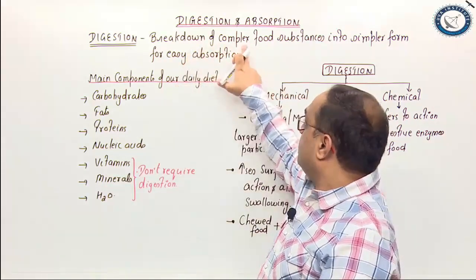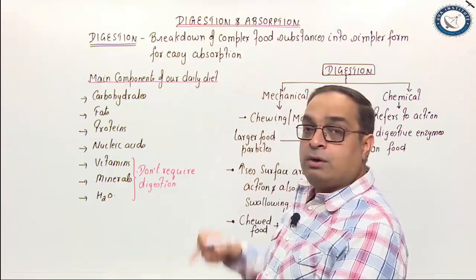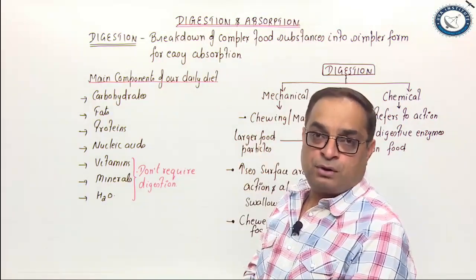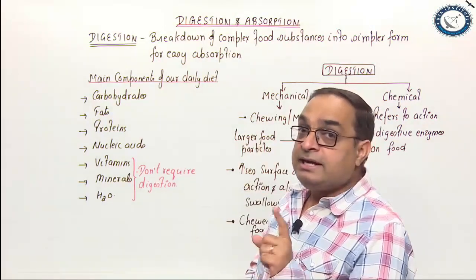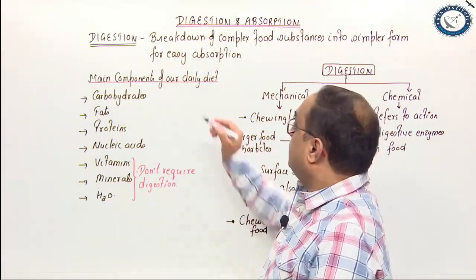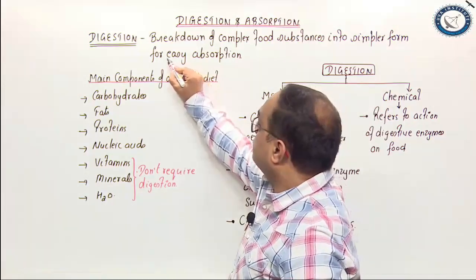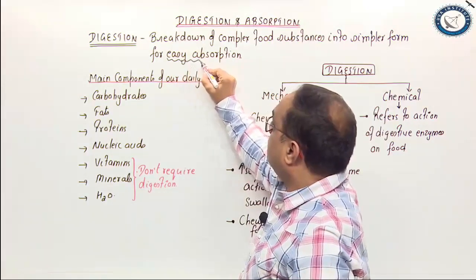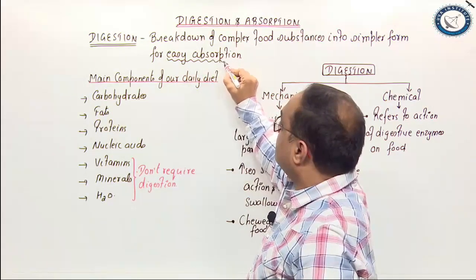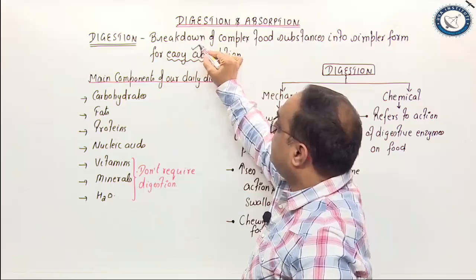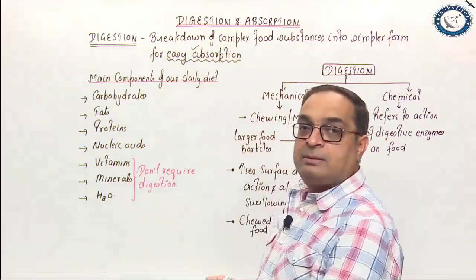Digestion is the breakdown of complex food into simpler form for easy absorption. You have to remember that the aim of digesting food is easy absorption.